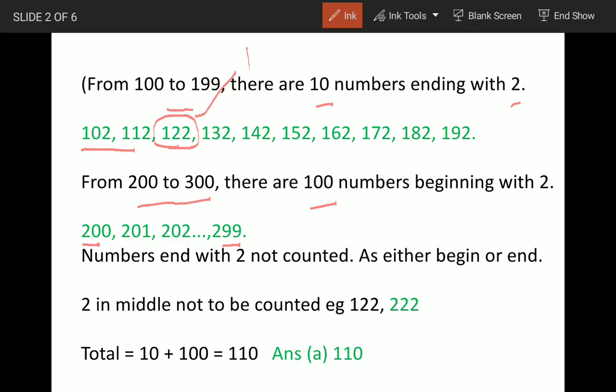This series from 200 till 299 will also have numbers like 202, 212, 222, but 2 will be counted only once, either at start or in the end as per question.